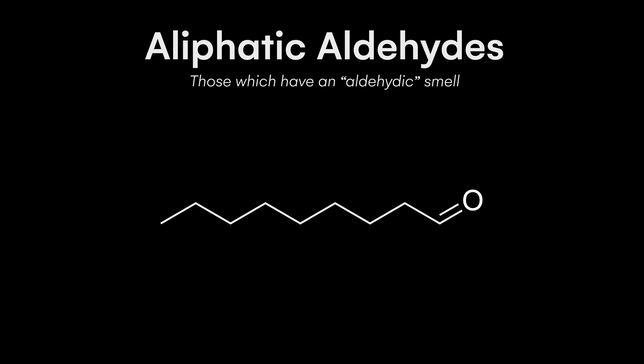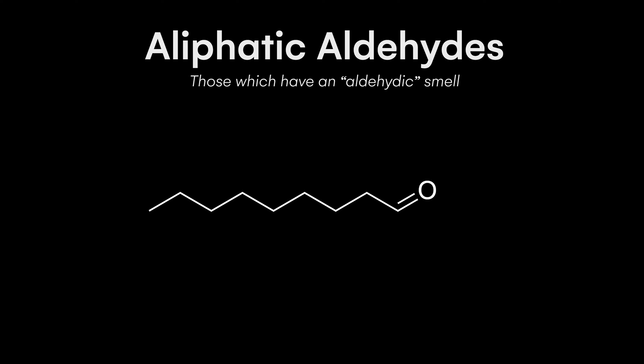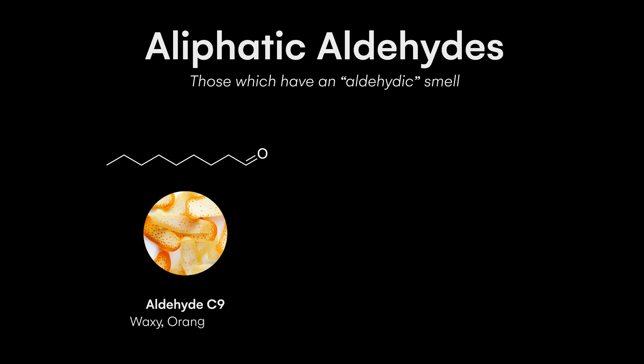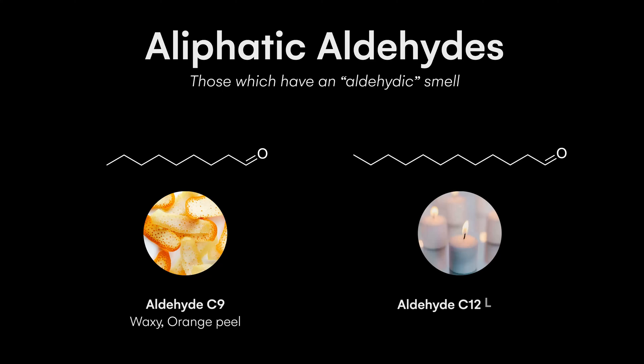Perfumers, trying to be a bit more simple, like to name these things with the number of carbons in that chain. So for example, aldehyde C9, which smells a bit like orange peel, has nine carbons in the chain with the aldehyde group on the end. Aldehyde C12, on the other hand, smells kind of waxy and soapy — that's got 12 carbon atoms in the chain with the aldehyde group on the end.